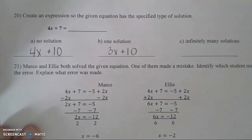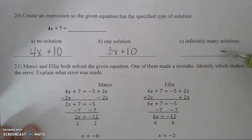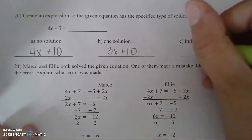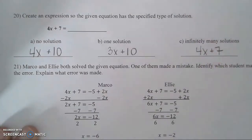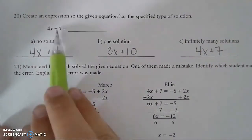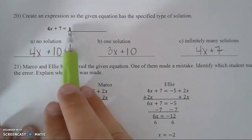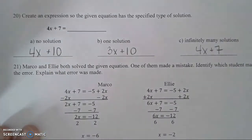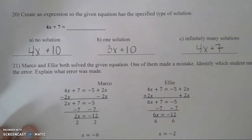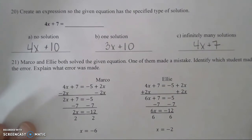For infinitely many solutions, the left side must equal the right side. For example, 4x plus 7 equals 4x plus 7 — since both sides are identical, this gives infinitely many solutions.